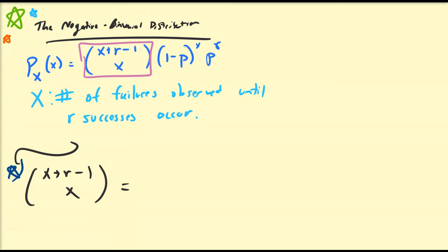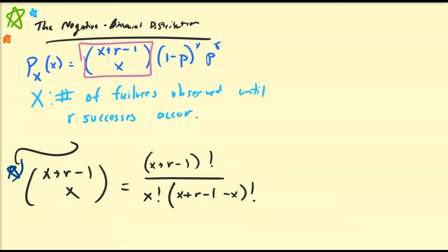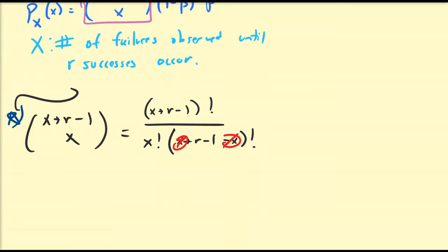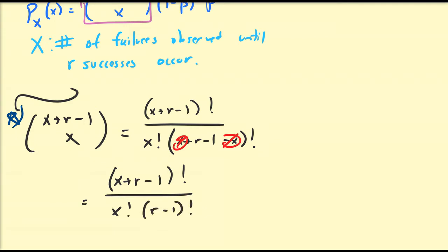As we know, x+r-1 choose x is going to be equal to (x+r-1)! all over x! times (x+r-1-x)!. The x's cancel out, so this is precisely equal to (x+r-1)! all over x! times (r-1)!.